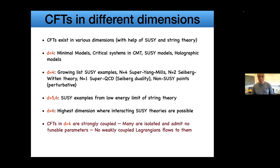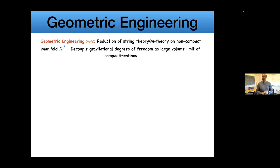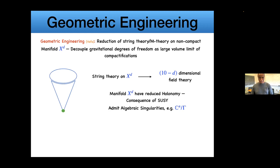When we talk about geometric engineering, what we mean is starting with some string theory or M-theory model and reducing it on some non-compact manifold X. The term geometric engineering was coined by Vafa some time ago. A more physical way to think about this is to decompactify whatever compact dimension you're reducing from. The fact that you're decompactifying is an effect of decoupling gravity from the story, and what's left is some quantum field theory. The typical depiction of such a construction is imagining some sort of cone of a manifold.